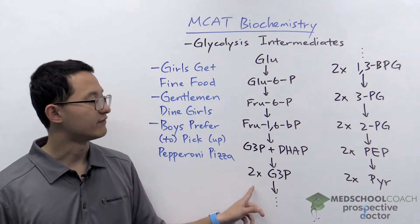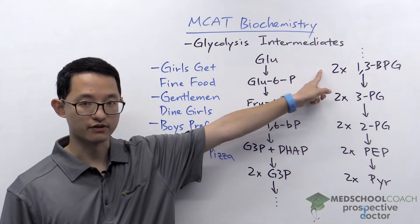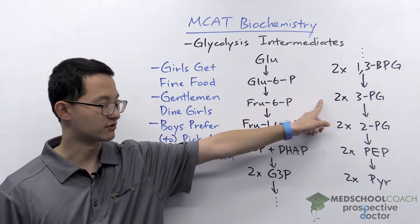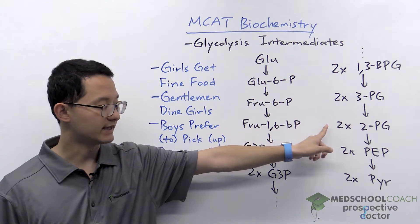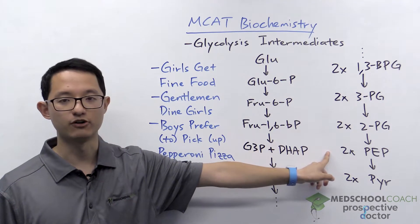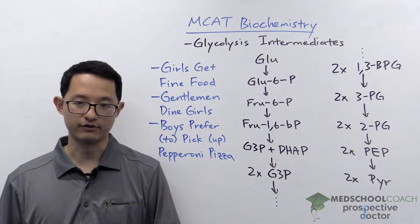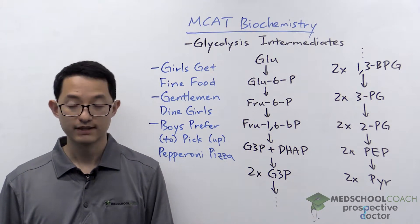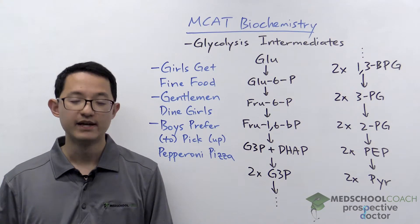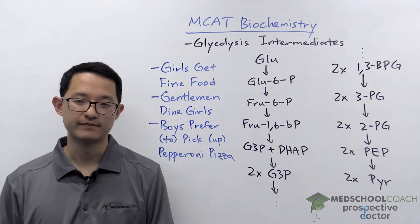G3P is then phosphorylated to form 1,3-bisphosphoglycerate, which is then converted to 3-phosphoglycerate, then 2-phosphoglycerate, then phosphoenolpyruvate, and finally 2 pyruvate. It's a lot of molecules and a lot of names, so our mnemonic is going to be very helpful for you.